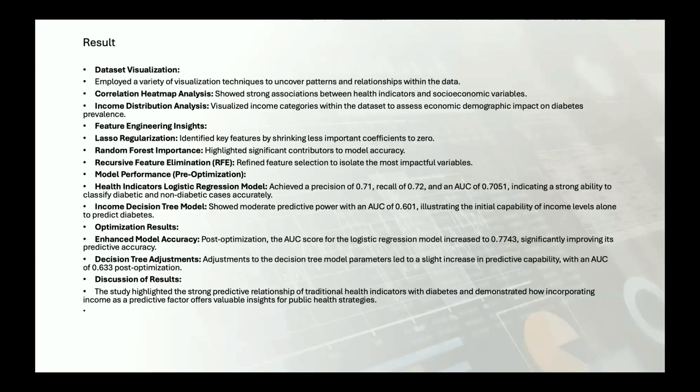For instance, our regression model's AUC score improved from 70% to 77%, demonstrating a strong capability to differentiate between diabetic and non-diabetic cases based on the identified health indicators. Meanwhile, the income-based decision tree model provides a fundamental understanding of how well socioeconomic factors alone can predict diabetes, with moderate success that improved slightly after optimization.